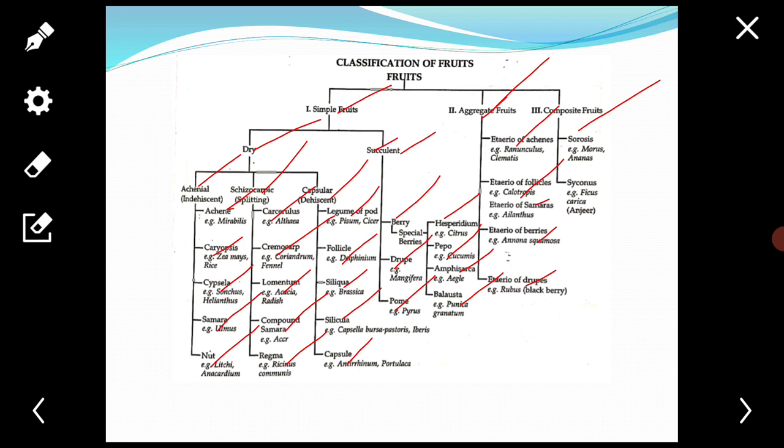Etaerio of samaras: a number of samaras developed from a single flower. Example: Ailanthus.